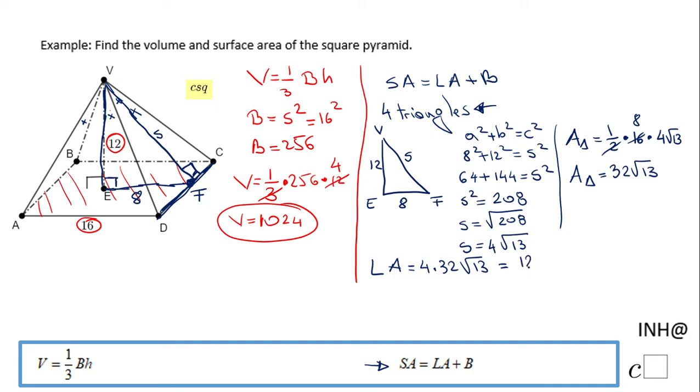And of course, last thing we're gonna do, we're gonna go back here in the surface area, and we're gonna have the lateral area, 128 square root of 13, plus the base, which if you remember we did, is 256. So the final answer for this problem for the surface area is 256 plus 128 square root of 13.